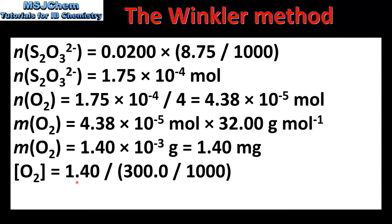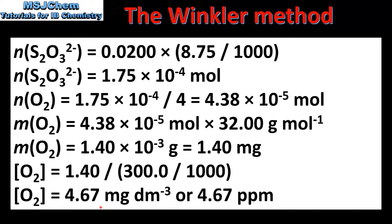To calculate the concentration of dissolved oxygen, we divide the mass in milligrams by the volume of the solution in dm³, which gives 4.67 mg per dm³, or 4.67 ppm.